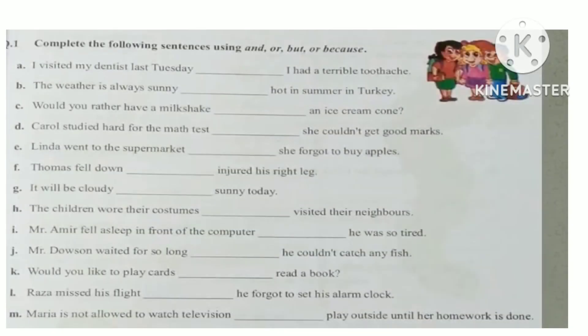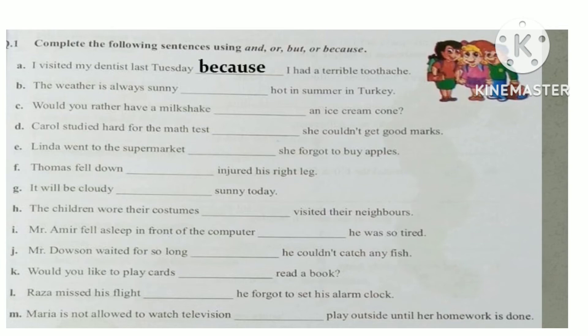Now we will solve worksheet number 20. First of all, write down the day and date on the top, and read question number 1 with me: complete the following sentences using AND, OR, BUT, or BECAUSE. Part A is: I visited my dentist last Tuesday __ I had a terrible toothache. The second part gives the reason, so we use BECAUSE. Answer: I visited my dentist last Tuesday because I had a terrible toothache.